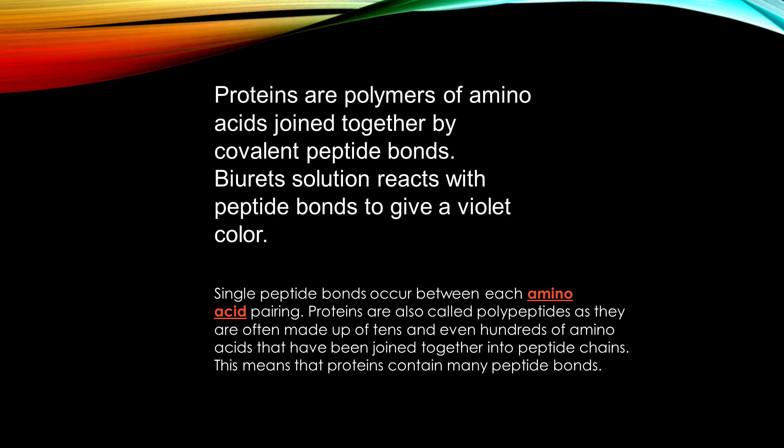Single peptide bonds occur between each amino acid pairing. Proteins are often called polypeptides as they are often made up of tens and even hundreds of amino acids that have been joined together into peptide chains. This means that proteins contain many peptide bonds.